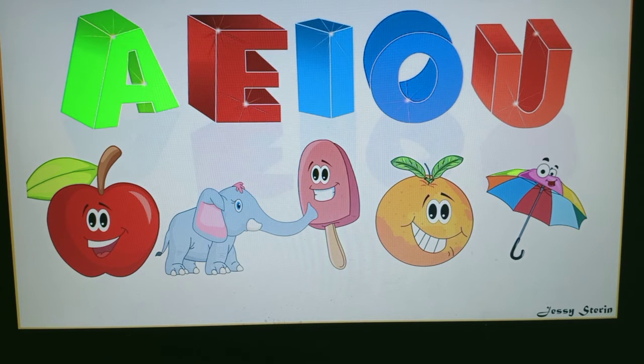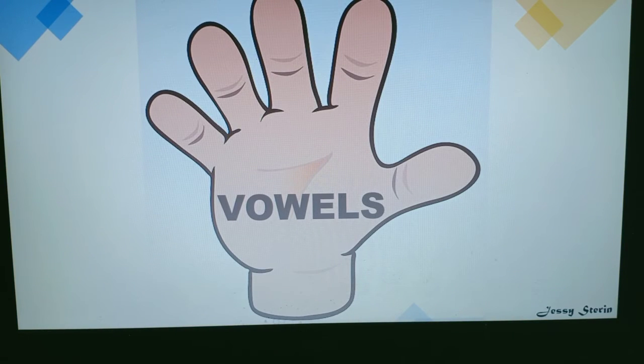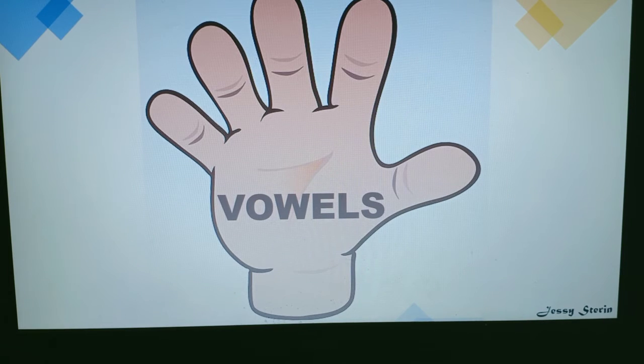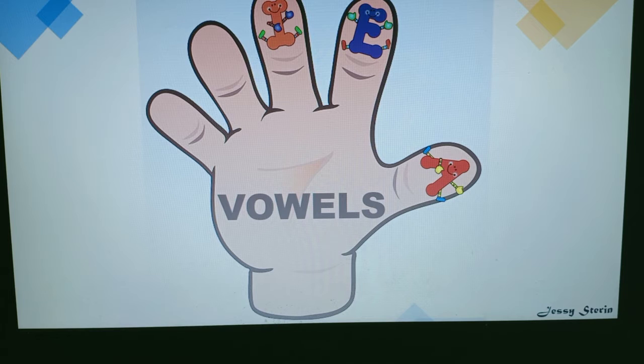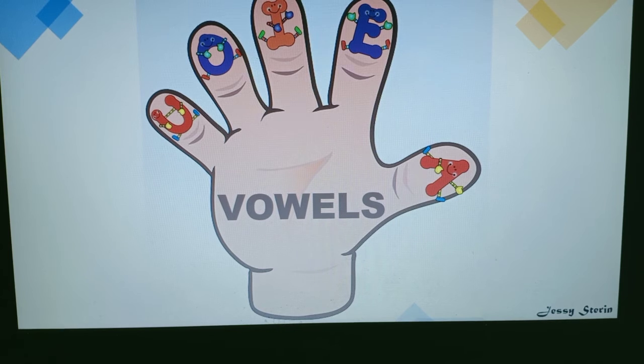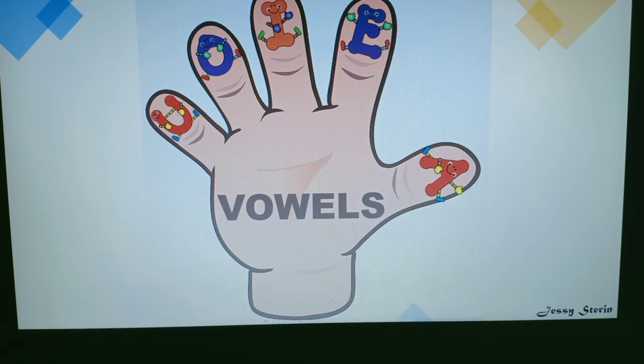Let us use our fingers like this, do it with me. Thumb finger is A, index finger is E, middle finger is I, ring finger is O, pinky or small finger is U. So all together they are five. You can remember easily by using your fingers like this: A, E, I, O, U.